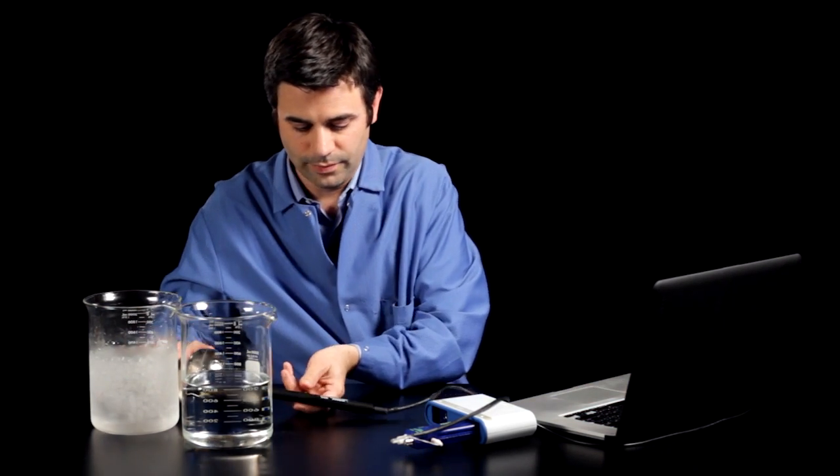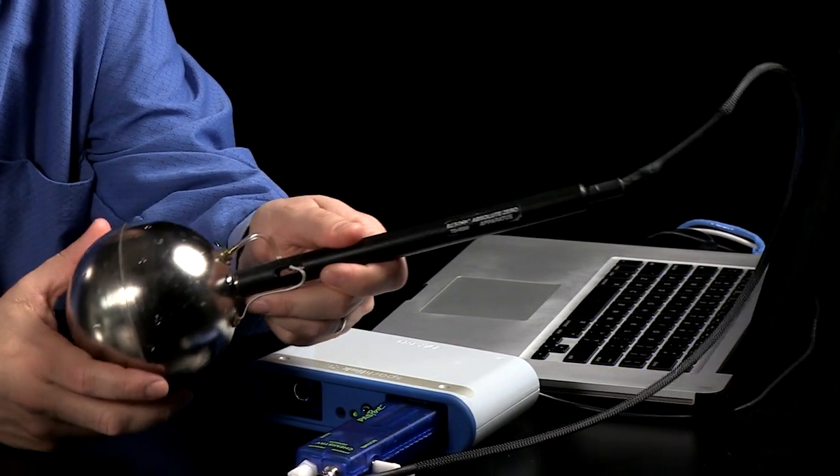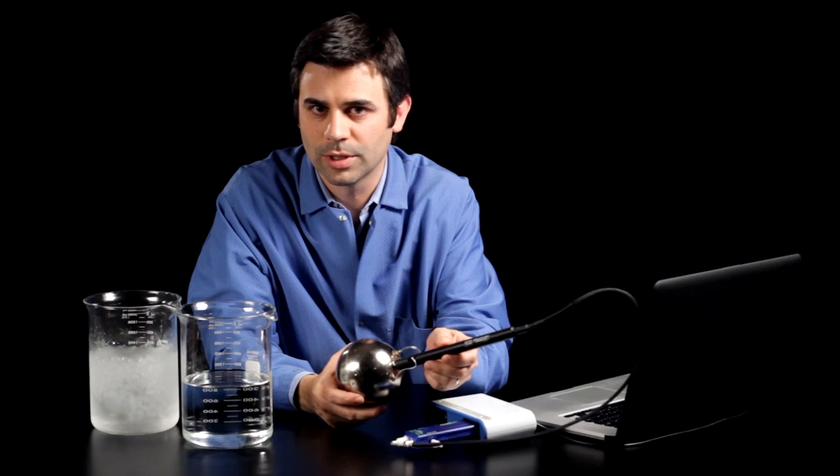So this absolute zero apparatus is a great tool for looking at the relationship between pressure and temperature, for getting to the ideas behind the Kelvin scale and absolute zero, which is something that students always question. How do we know?